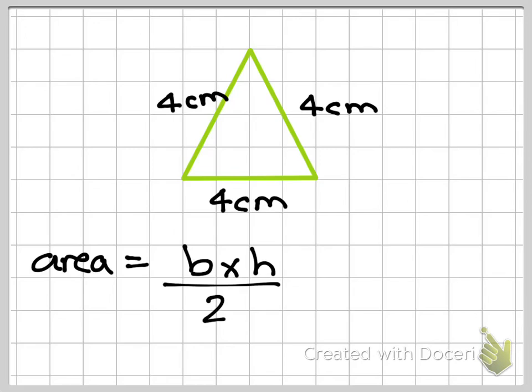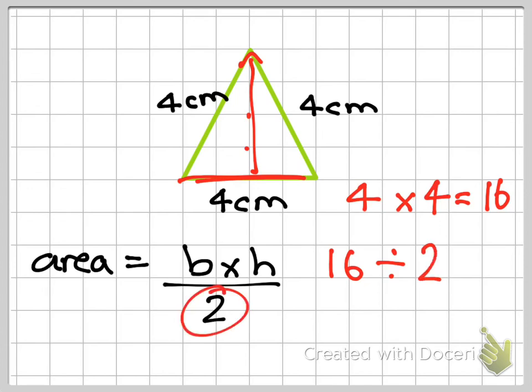So in this question, my base is 4 centimetres. My height, how tall it is, is 1, 2, 3, 4 centimetres. That gives me 16. 16, and then 16 divided by 2 equals 8 centimetres.